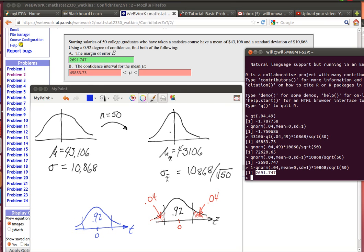That squishes this distribution together quite a bit more. Now what we're interested in doing is finding this value right here and this value right here. These two quantiles so that the part inside of here is 92 percent.